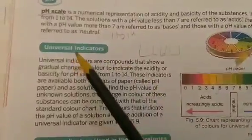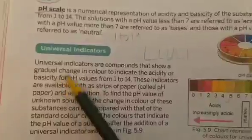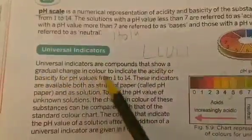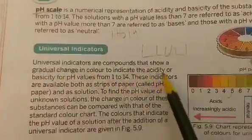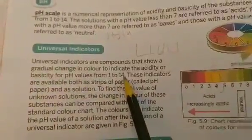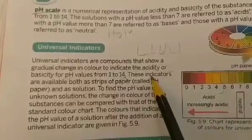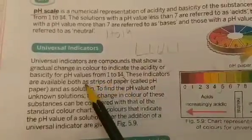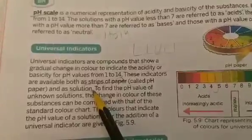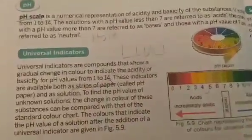Actually, pH indicators are universal indicators. Universal indicators are compounds that show a gradual change in color to indicate the acidity or basicity of the pH value from 1 to 14. These indicators are available in both forms — as paper strips and as a solution. So this is all about the pH scale.